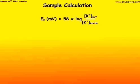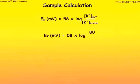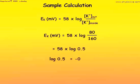Let us use the Nernst equation to calculate the membrane potential for the potassium ion from our example of the Gibbs-Donnan equilibrium. The potassium potential equals 58 times the log of 80 divided by 160. This converts to 58 times the log of 0.5.